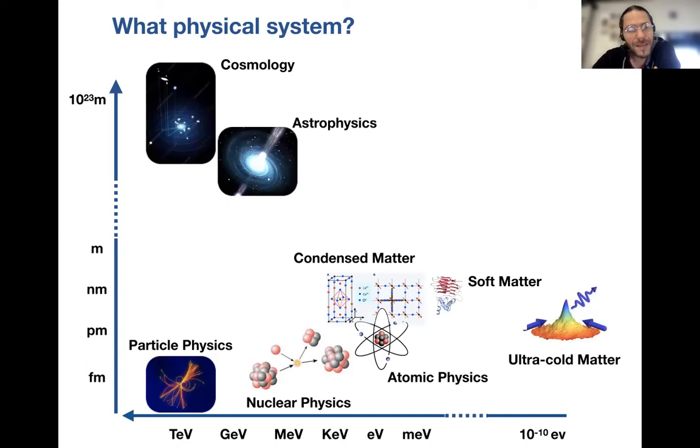One might be led to think that in order to become proficient enough in any of these subjects to reach the edge of research, one needs a very specific training and therefore start choosing the preferential field of interest very early in the education. On the other hand, physics and theoretical physics in particular displays an enormous amount of unitarity and universality.